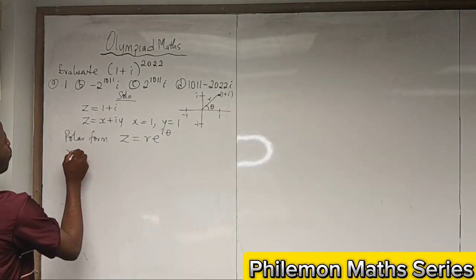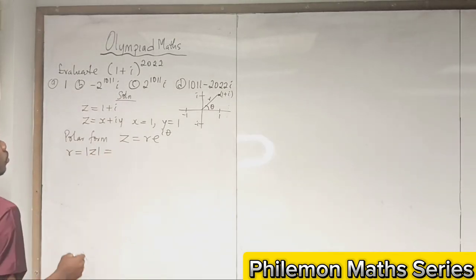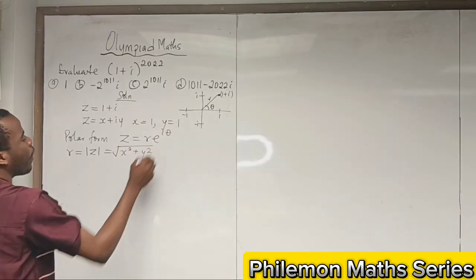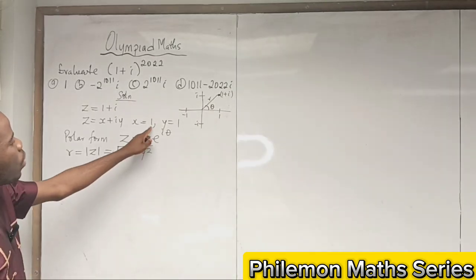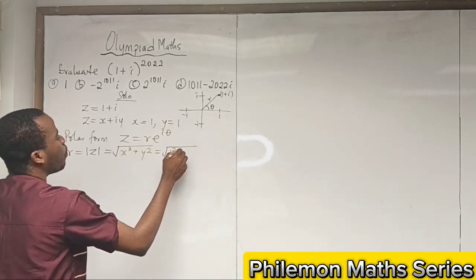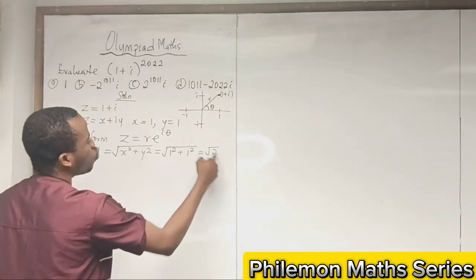So r is the modulus, which is given as √(x² + y²). x is 1, y is 1, so we have √(1² + 1²), which is √2.